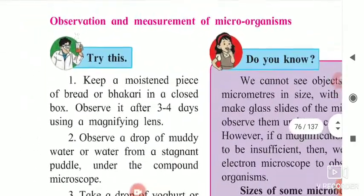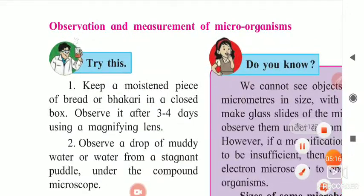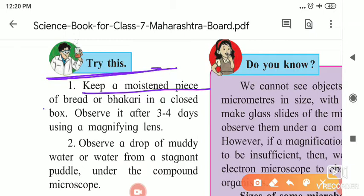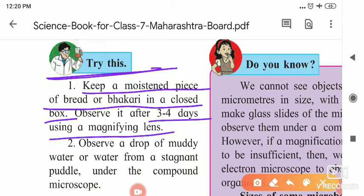Observation and measurements of microorganisms. Now we will discuss about the observation and measurement of microorganisms. Try this activity: keep a moistened piece of bread or bhakri in a closed box. Observe it after 3 to 4 days using a magnifying glass. You will notice small gray-colored projections growing on it, and that is nothing but fungus.